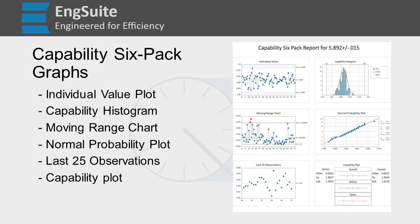As I mentioned, it's called a six-pack because it has six graphs: an individual value plot, a capability histogram, a moving range chart, normal probability plot, last 25 observations, and a capability plot. We're going to go through all of these in order from the top left, right, middle left, right, bottom left, right, so you can follow along.